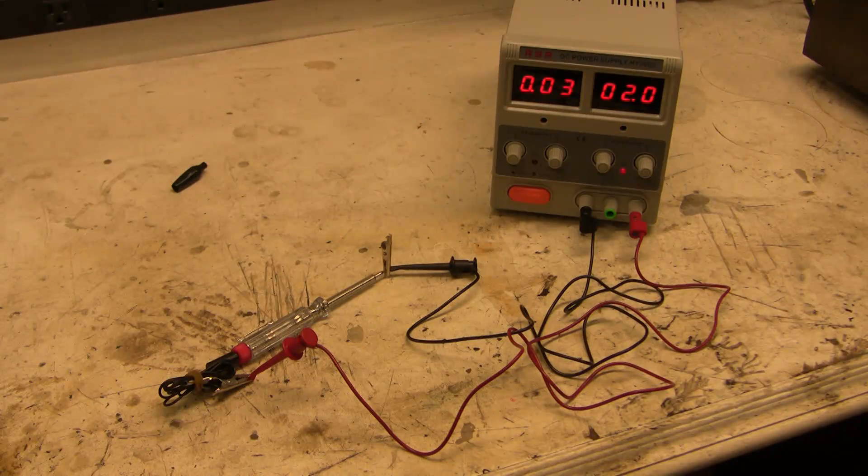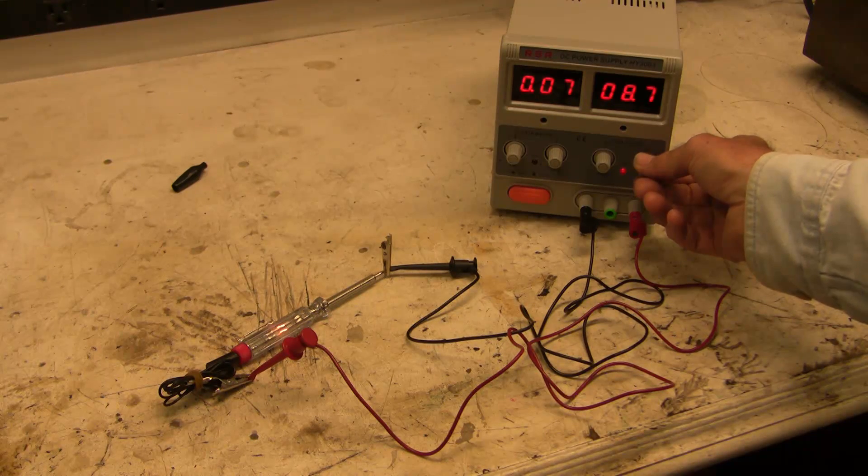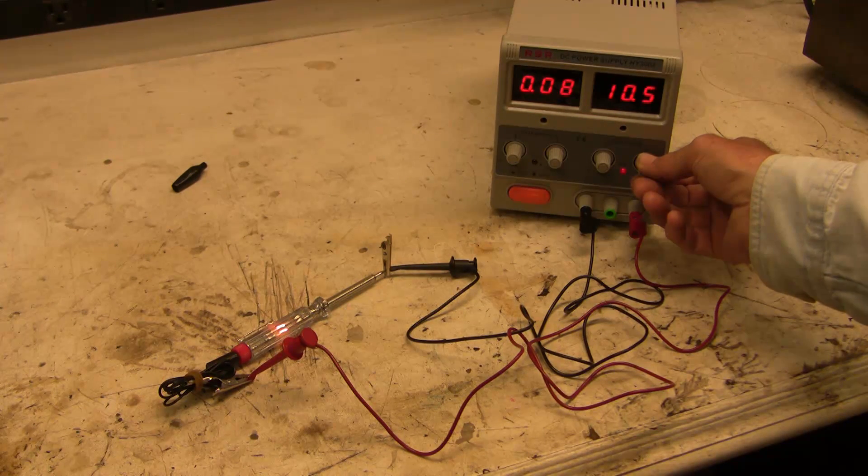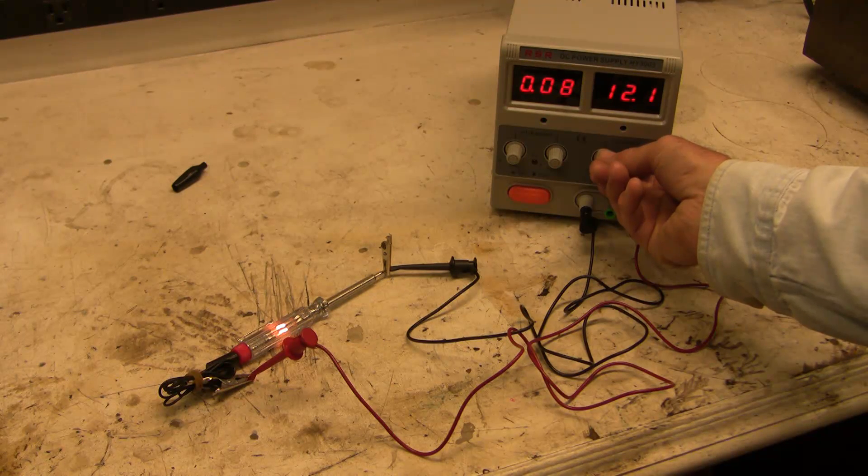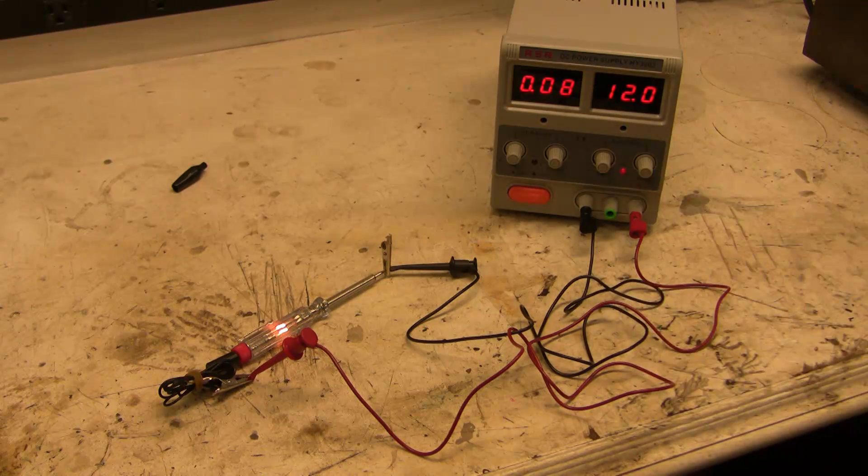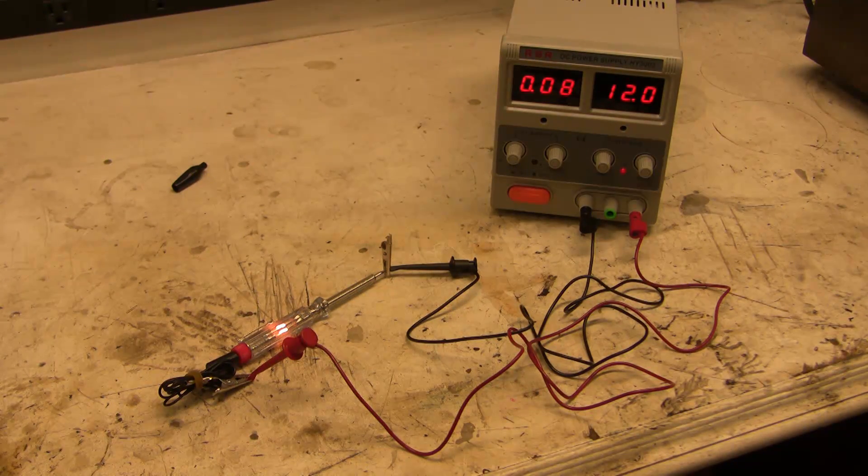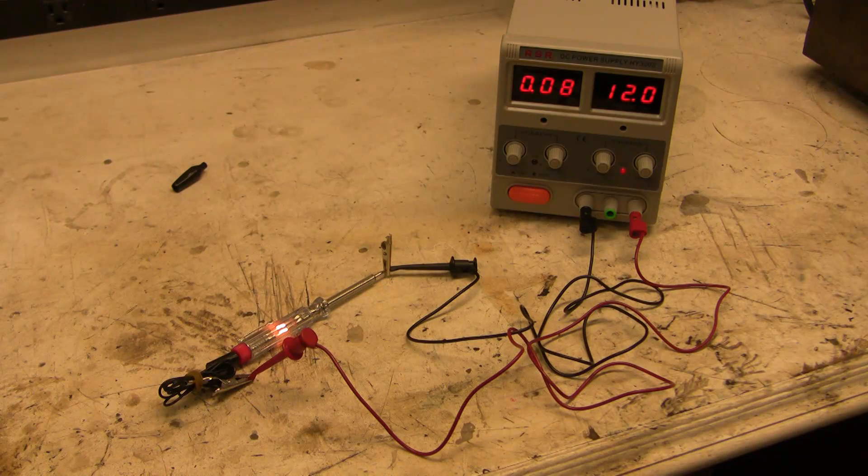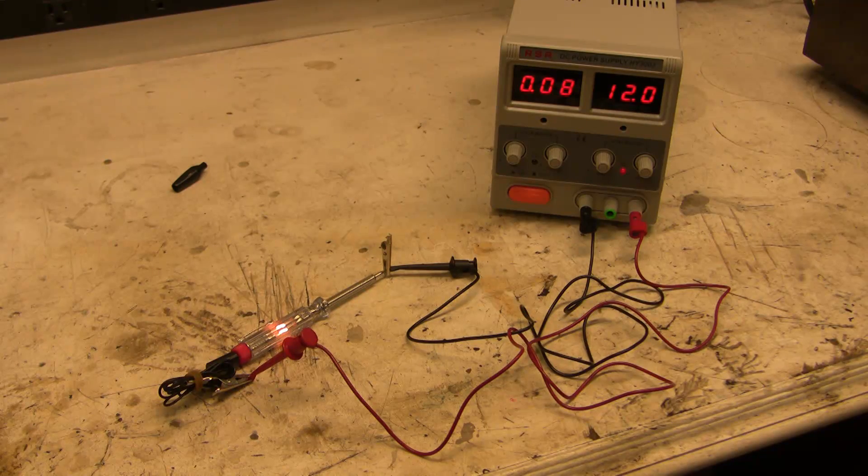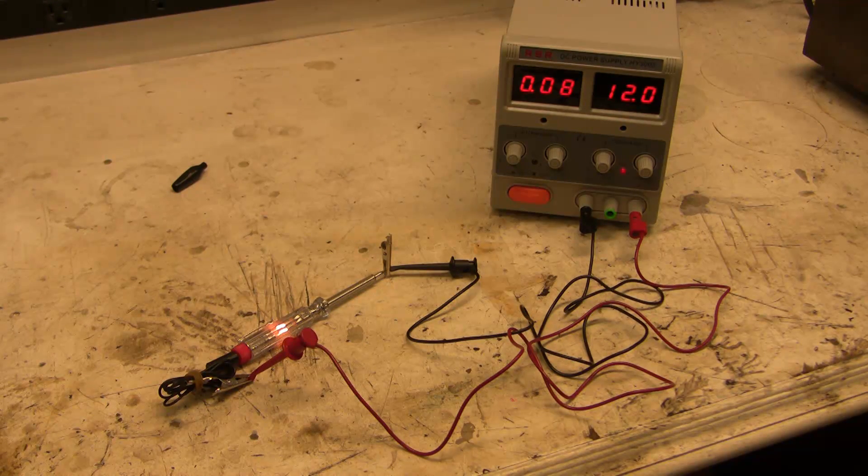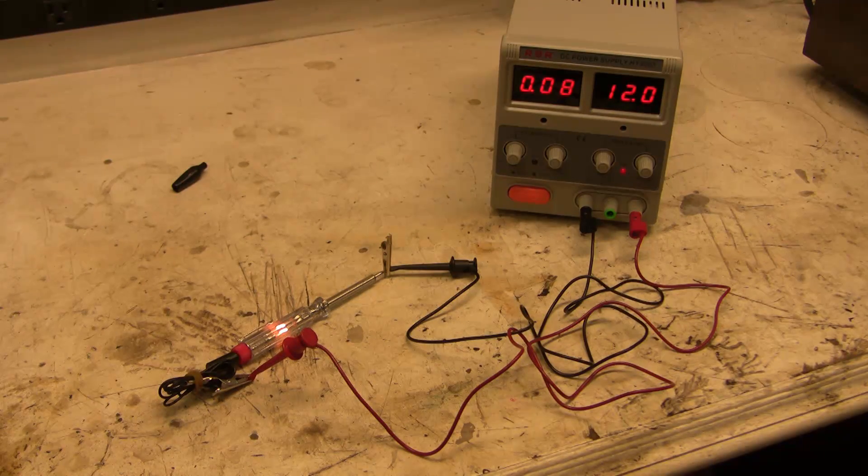Okay, so I've got a second test light hooked up here and I'm going to do the same thing. I'm going to raise the voltage and you can see the light turning on. There we are at 12 volts, and in this case we've only got 80 milliamps going through the circuit. So for this particular test light it requires less current to turn it on, and so this might be a better choice in the situation where you're worried about downstream current affecting other structures.